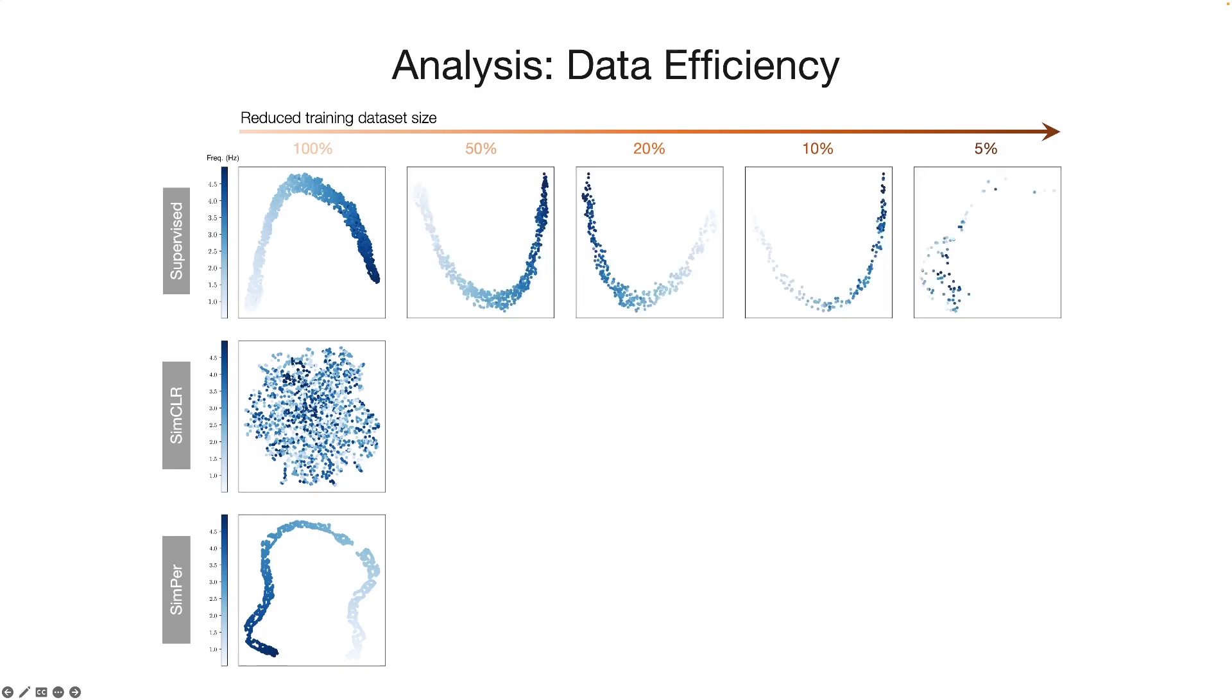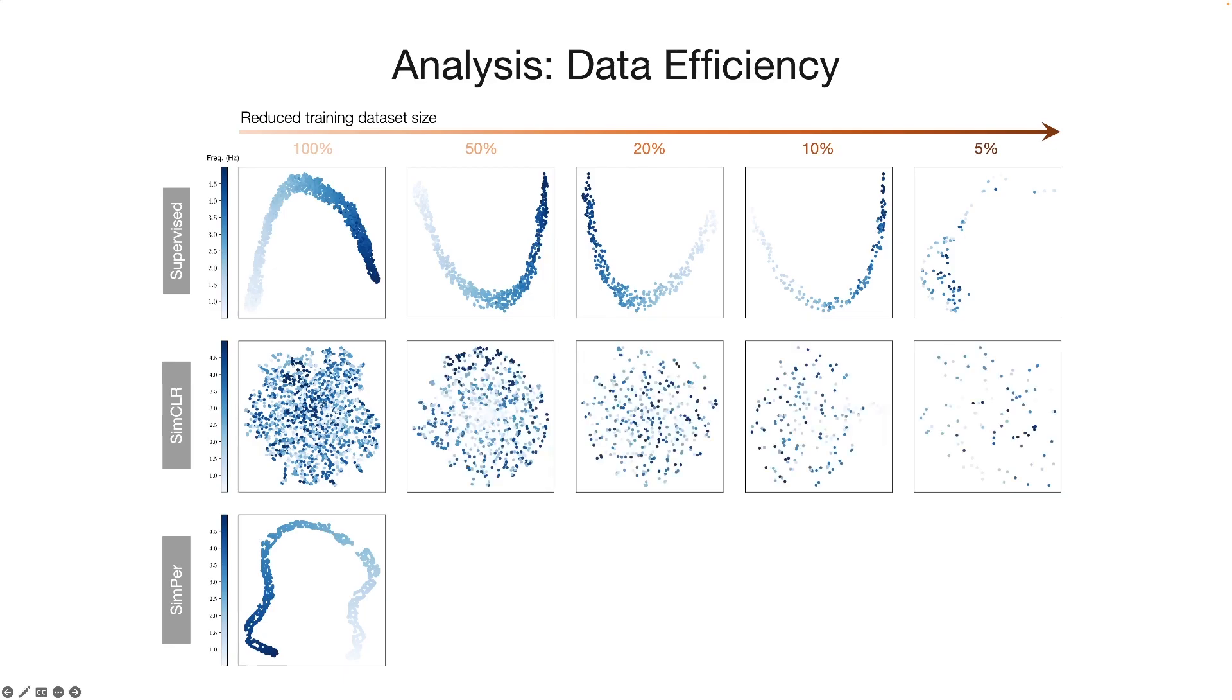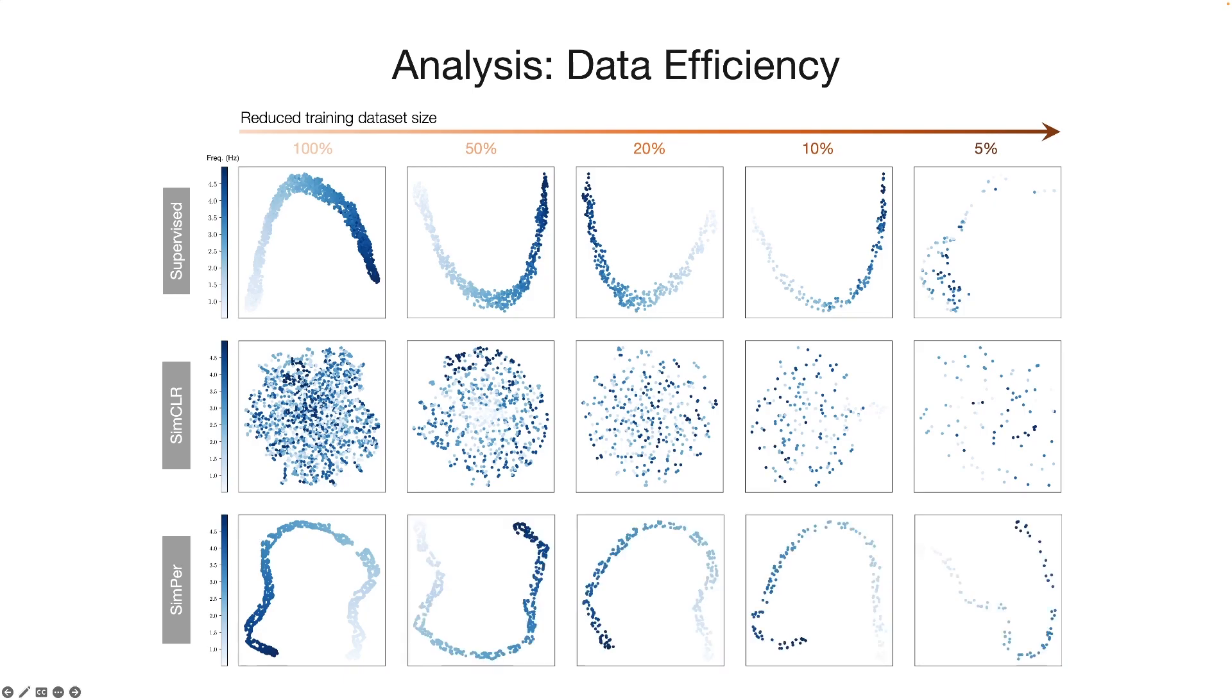In the case of supervised learning, although the learned features still preserve periodic information, there is a clear degradation when the dataset size is extremely small. SimCLR fails to learn the periodic information across all dataset sizes. Even with a small number of training samples, SIMPER can consistently learn the periodic information and maintain high frequency resolution.